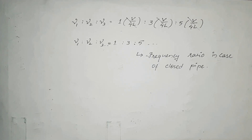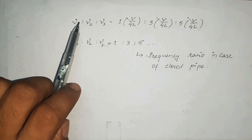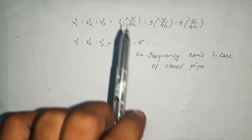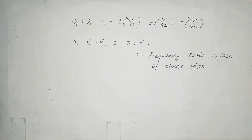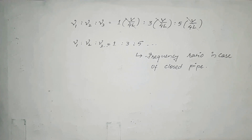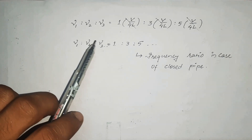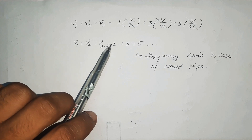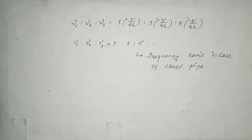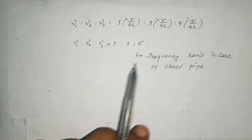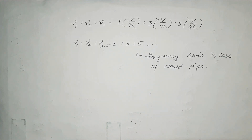The frequency ratio is nu_1 : nu_2 : nu_3 equals 1 times V by 4L : 3 times V by 4L : 5 times V by 4L. All the common terms cancel and finally we have nu_1 : nu_2 : nu_3 equals 1 : 3 : 5. This is the frequency ratio in case of a closed pipe.